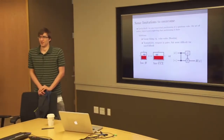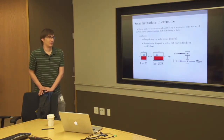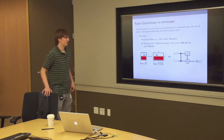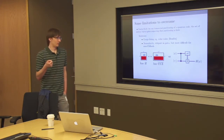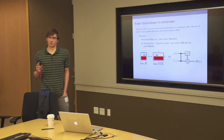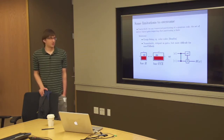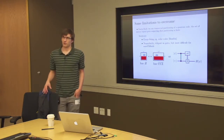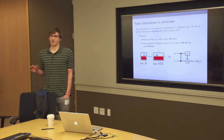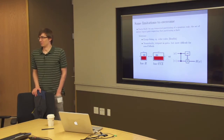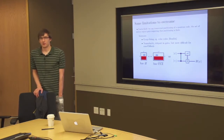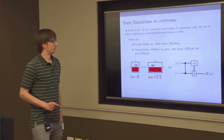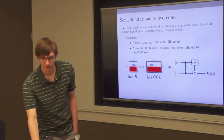Bacon-Shor codes do not have a threshold. That's a downside, but it's not necessarily catastrophic because there's still a value of logical error rate they can reach for any given physical error rate. There's a paper by Knapp and Preskill showing that on symmetric Bacon-Shor codes, if you have a physical error rate of 10⁻³ you can achieve a logical error rate of 10⁻²⁸. That was not including measurement errors, which we'll address in the error correction discussion.